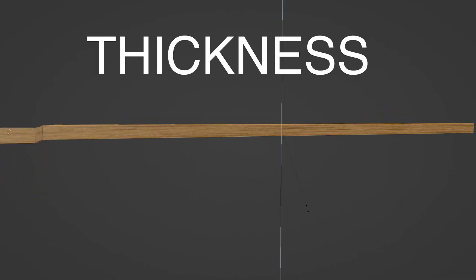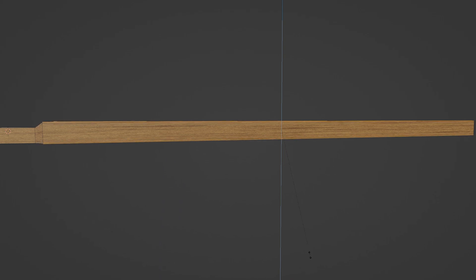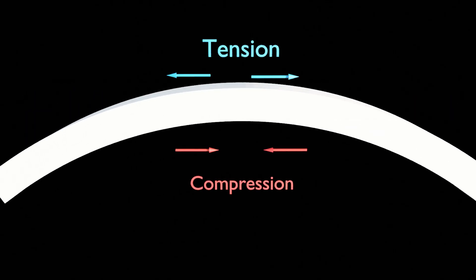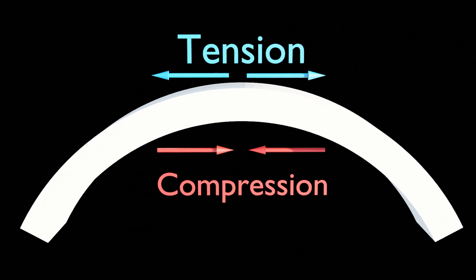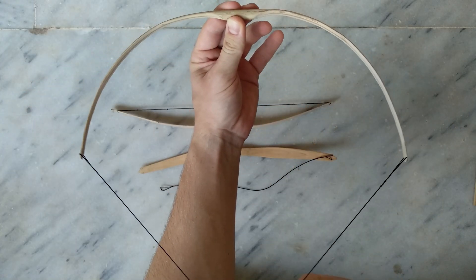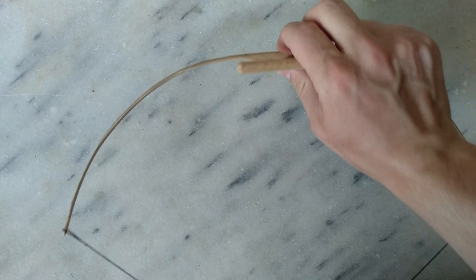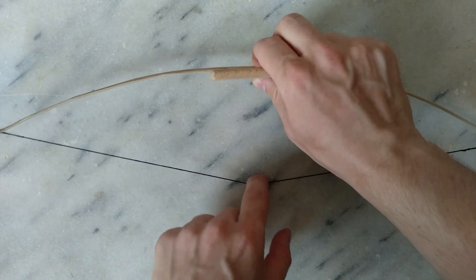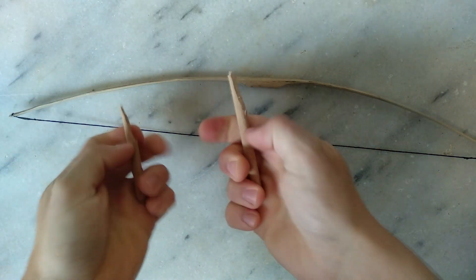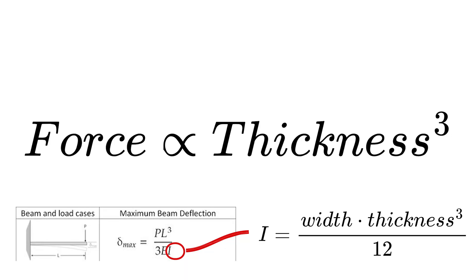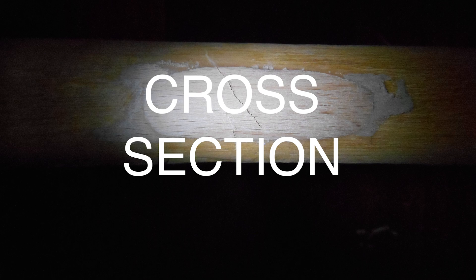Thickness. For a given curvature, increasing the thickness will increase the stretch on the back fibers and compression on the belly fibers of the bow. Wood fibers can strain a certain amount before breaking, so the thickness will determine the curve a beam can take before breaking. The strength of the bow is proportional to the cube of the thickness.